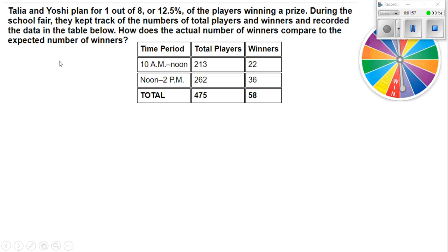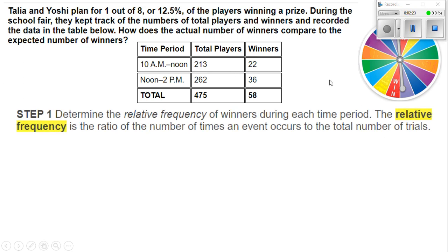Talia and Yoshi plan for one out of eight, or 12.5% of the players, winning a prize. During the school fair, they kept track of the number of total players and winners and recorded the data in a table. How does the actual number of winners compare to the expected number of winners? We're comparing what actually happened to what we expected to happen. Step one: determine the relative frequency of winners during each time period. The relative frequency is the ratio of the number of times an event occurred to the total number of trials — how many times you actually succeeded over how many times you attempted.